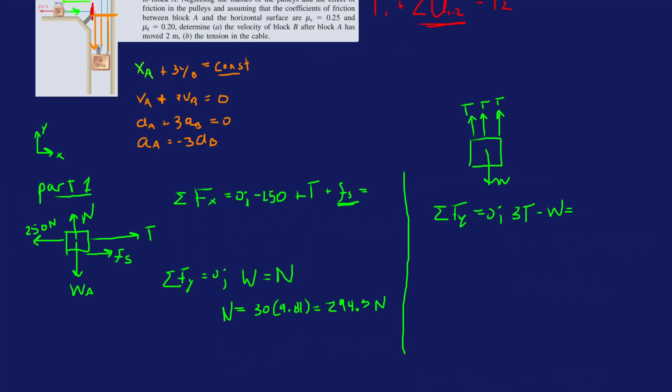So I've already erased a few things. Now we need kinetic friction, fk, and it's not equal to 0 anymore. It's equal to mass times acceleration in the X for A. And this one, it's not equal to 0 anymore. It's equal to mass of B times acceleration of B.